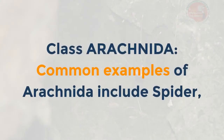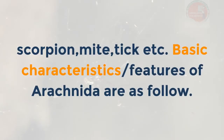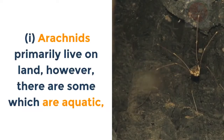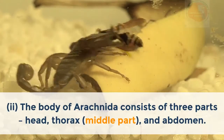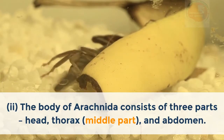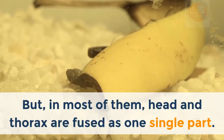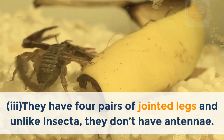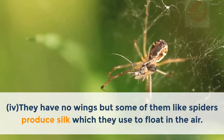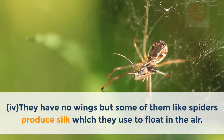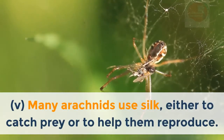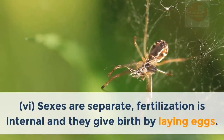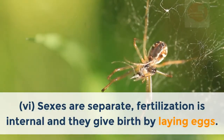Class Arachnida: common examples include spider, scorpion, mite, tick, etc. Basic characteristics: i. Arachnids primarily live on land, though some are aquatic. ii. The body consists of three parts — head, thorax and abdomen — but in most, head and thorax are fused. iii. They have four pairs of jointed legs and unlike insects, they have no antennae. iv. They have no wings, but some like spiders produce silk to float in the air. v. Many use silk to catch prey or aid reproduction. vi. Sexes are separate; fertilization is internal and they lay eggs.